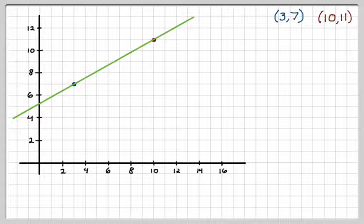So let's say that we have a line that goes through the points 3, 7, and 10, 11. So what I'm going to do, this has to do with vectors. So the first thing I'm going to do is, I'm actually going to make a vector between those two points.